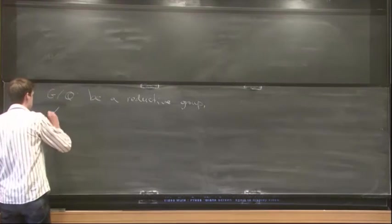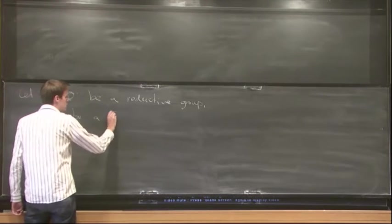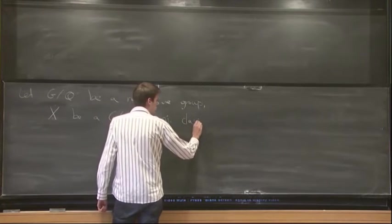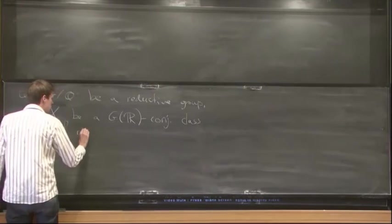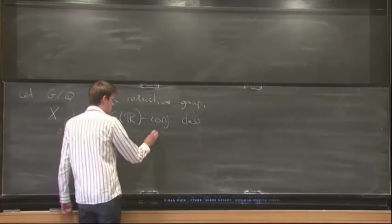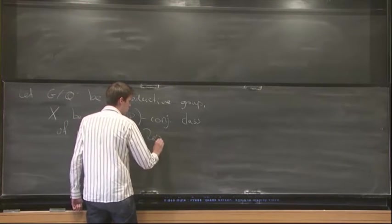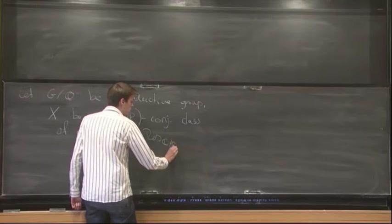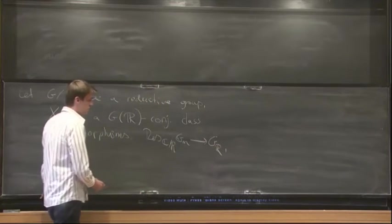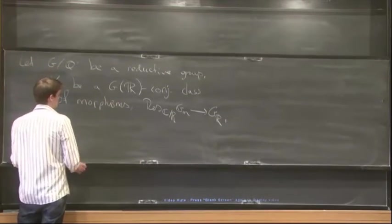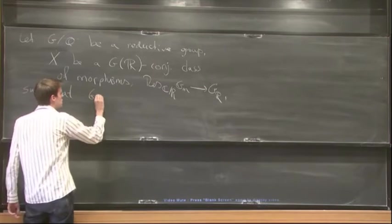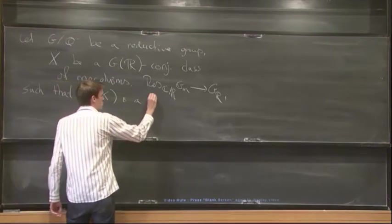And X, the GR conjugacy class of morphisms X from C star to GR, such that the couple is a Shimura datum.